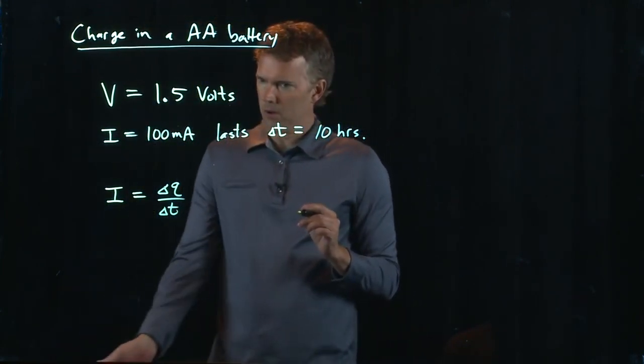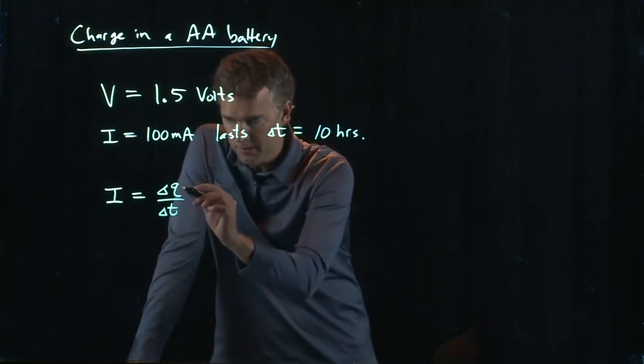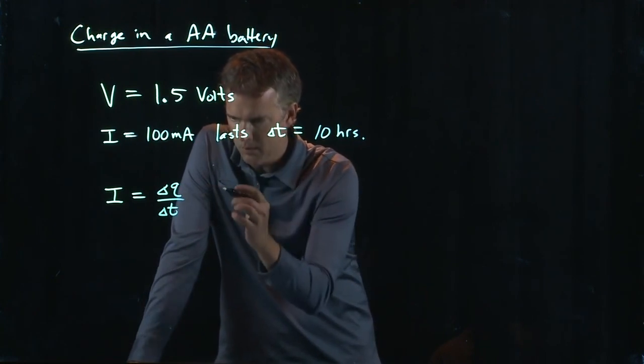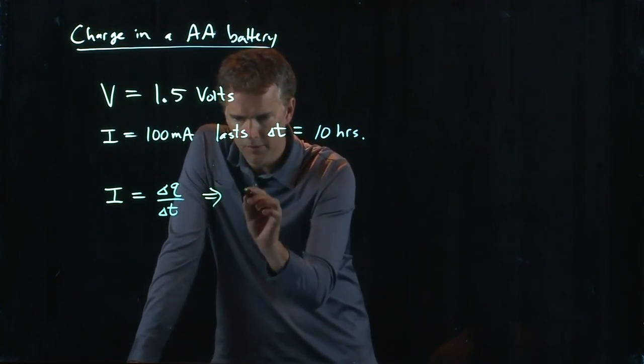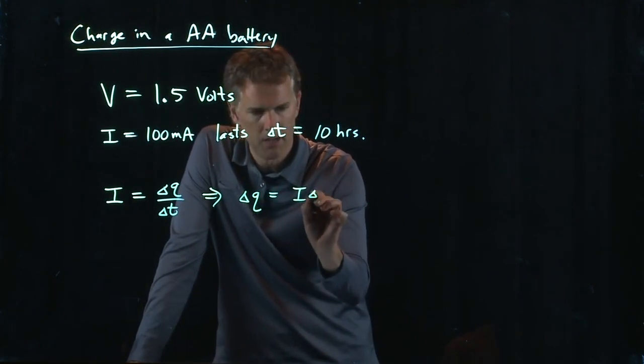We also know that we have I, we have ΔT, we're looking for ΔQ, and that's going to be in coulombs. So let's just solve this for ΔQ. ΔQ equals I ΔT.